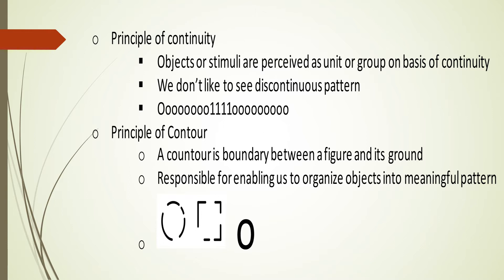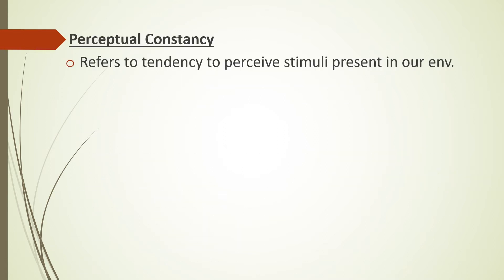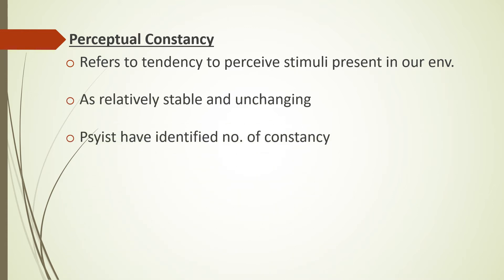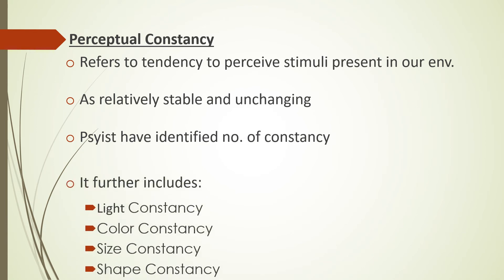The principle of contour states that a contour is a boundary between a figure and its ground, and it is responsible for enabling us to organize objects into a meaningful pattern, as shown in the example. Next is perceptual constancy — it refers to the tendency to perceive stimuli in our environment as relatively stable and unchanging. Psychologists have identified a number of constancies, including light, color, size, and shape constancy.